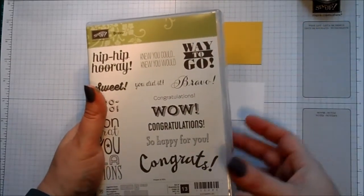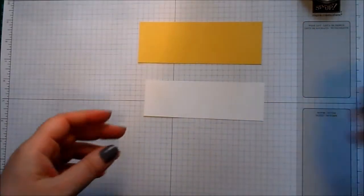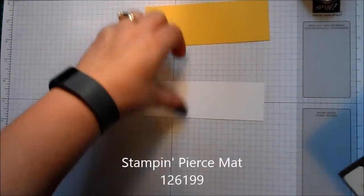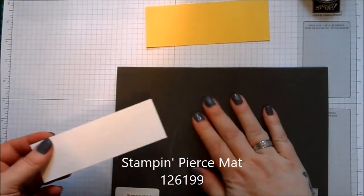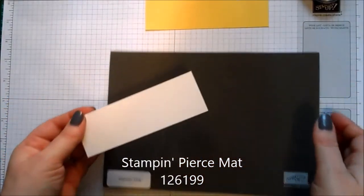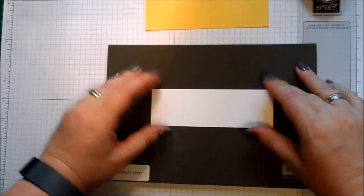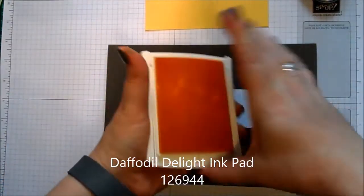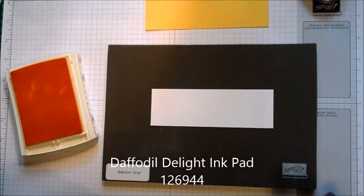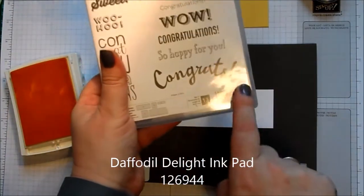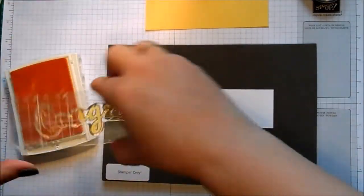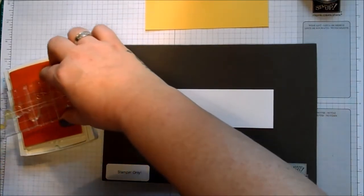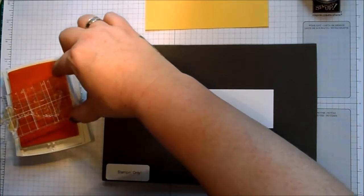Now because it's photopolymer I'm going to use my stamping pierce mat, which just gives you a little bit of give because they've got no cushion like our red rubber stamps have. So I'll pop that on there.